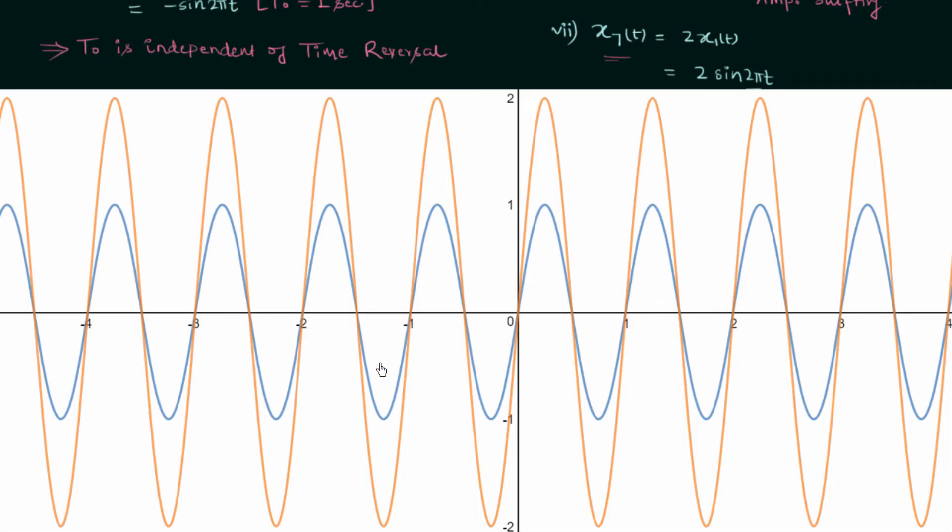You can see the orange waveform. It is the waveform of signal x7(t) and you can clearly see the difference between the amplitude of the blue waveform, which is the waveform of signal x1(t), and the orange waveform. The amplitude is double if you compare signal x7(t) with x1(t). This is because we multiplied 2 to the signal x1(t).